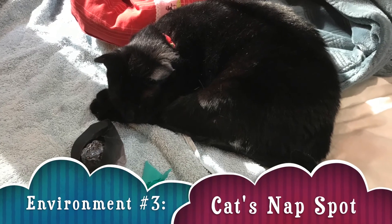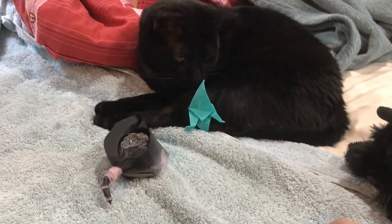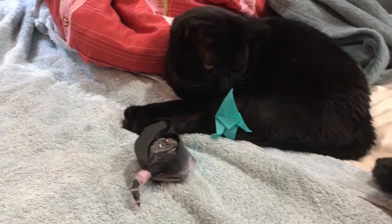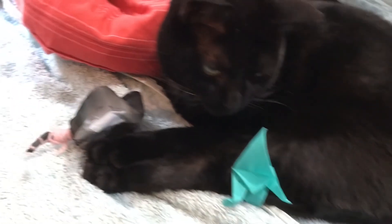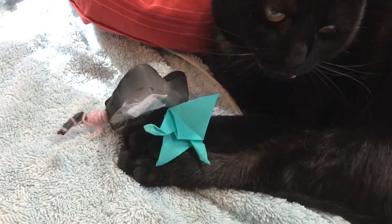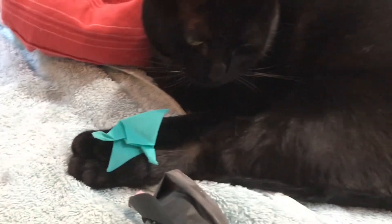Environment number three, Cat's Nap Spot. We wanted to test how our trash birds would interact with another organism, specifically a cat. Would the cat act as a predator to our birds? We found the cat to be very disinterested with our birds, so I guess the birds were adapted to coexist with an animal such as a cat.